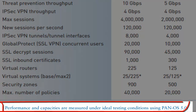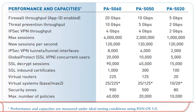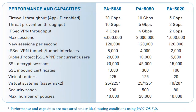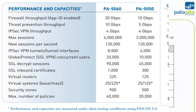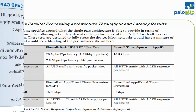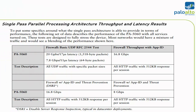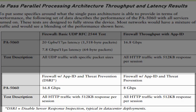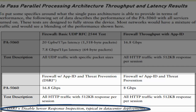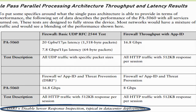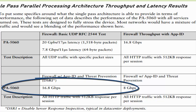Performance numbers are available in data sheets, but these are based upon ideal testing conditions. The most reliable method is to test the appliance in a proof of concept. But how do you configure the appliance? For instance, if you're purchasing a security appliance for perimeter protection, then you'll want server response inspection enabled, and you'll want to know the performance number in this configuration.